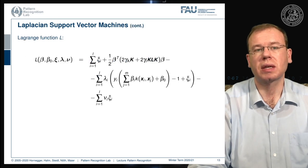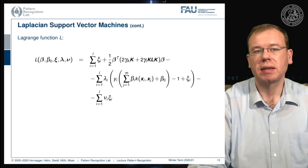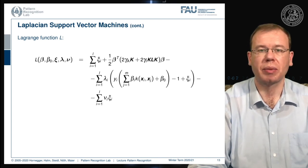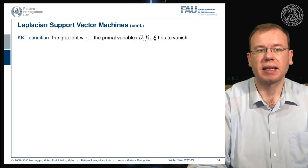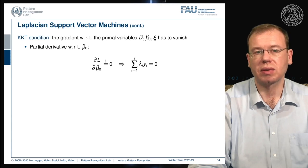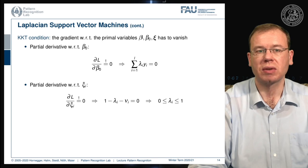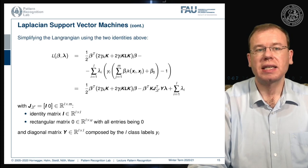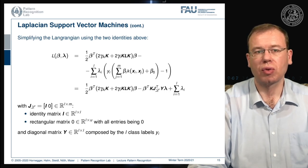Now that we have set up the constraints, we can construct the Lagrange function by introducing additional Lagrange multipliers lambda and nu, giving an unconstrained formulation using Lagrange multiplier formulas. The KKT conditions hold for this problem, so the gradient with respect to the primal variables must vanish. The partial derivative with respect to beta_0 implies that the sum over labeled samples of lambda_i times y_i equals zero. The partial derivative with respect to xi implies that lambdas must be between zero and one.